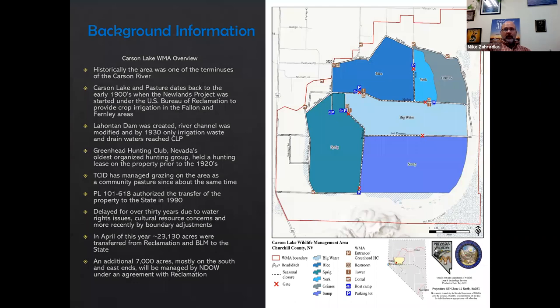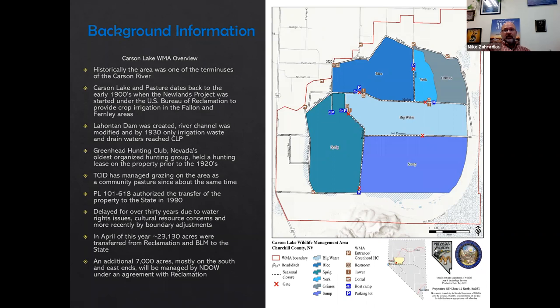A brief background on Carson Lake and Pasture: it's located about eight miles south of Fallon. Carson Lake was historically one of the terminuses of the Carson River. The area dates back to the early 1900s when the Newlands Project was started under the U.S. Bureau of Reclamation to provide irrigation water for crops in the Fallon and Fernley areas. Lahontan Dam was finished in 1915, the river channel was modified to reduce urban flood impacts, and by 1930 only irrigation waste and drain water reached this area.